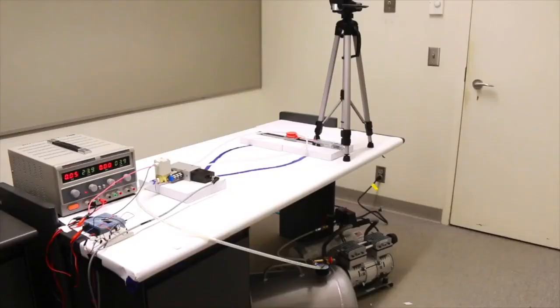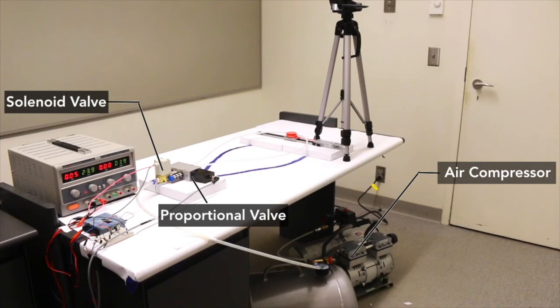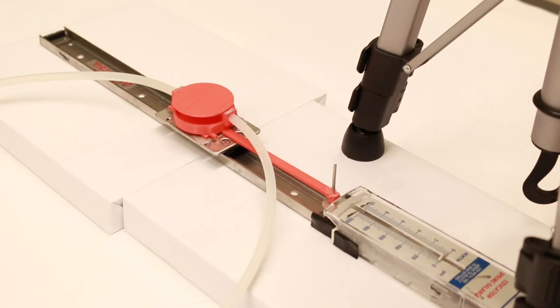To control the output force on the smartwatch, we first conducted an experiment to map between the output force and voltage. Our pneumatic system consists of an air compressor, proportional valves, and a solenoid valve, all of which were controlled using a laptop. The setup was then connected to a mock 3D printed smartwatch, connected to nozzles in different directions to simulate movement.